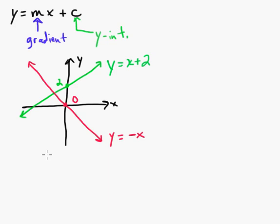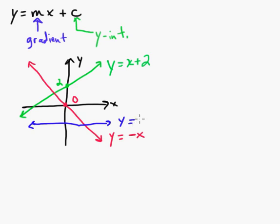If you have a horizontal line like this, obviously the gradient there is 0, so we wouldn't have any x's. So that would just be — let's say it crossed at negative 2 — it would be y equals negative 2.